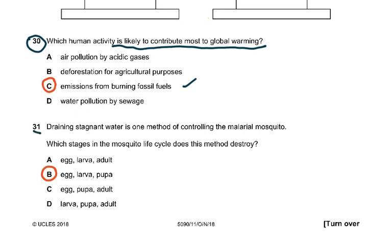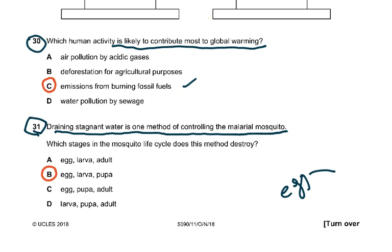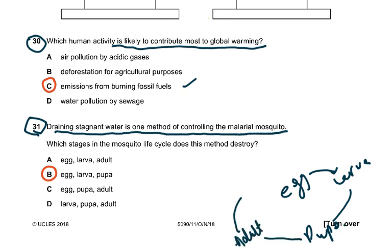Question 31: Draining stagnant water is one method of controlling the malarial mosquito. The eggs are laid in stagnant water, then hatch into larvae in the water, then into pupae. The adult mosquito then flies off. So draining stagnant water destroys the egg, larva and pupa stages only — the adult was not included because it doesn't live in stagnant water.